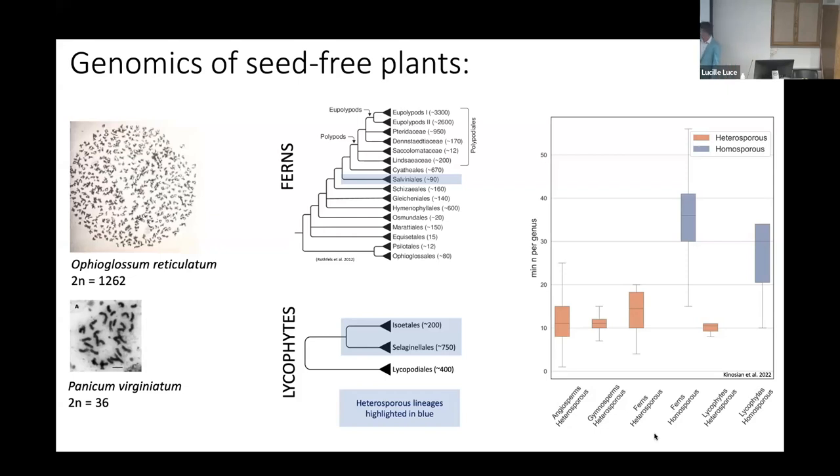Homosporous plants tend to have much larger genomes with more chromosomes. An extreme example is Ophioglossum reticulatum, which has over 1,200 chromosomes. If we compare this to a heterosporous angiosperm like the grass Panicum virginiatum with only 36 chromosomes, this is an extreme example, but it's a pattern borne out across all vascular plants where homosporous lineages on average have three to four times the number of chromosomes as heterosporous lineages.